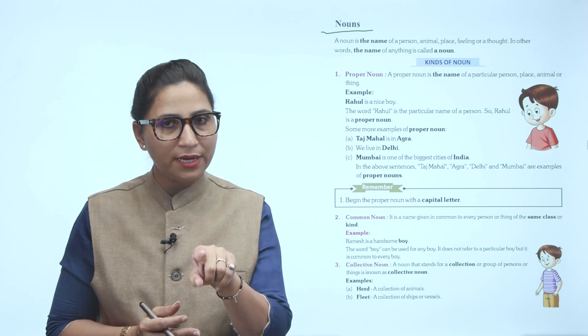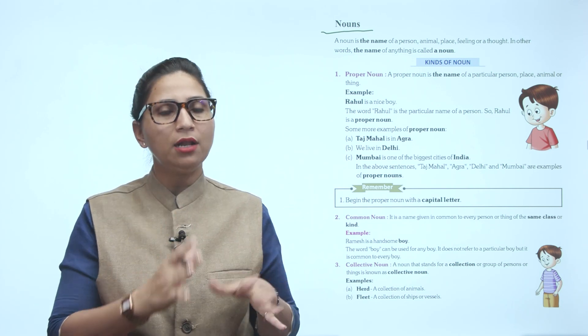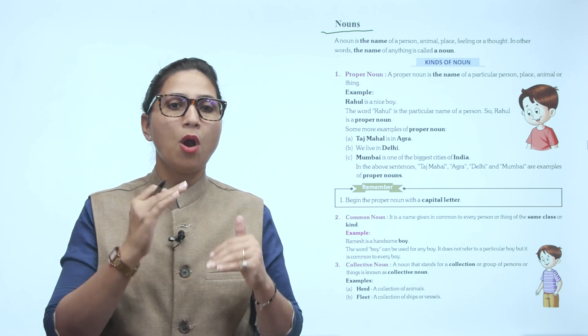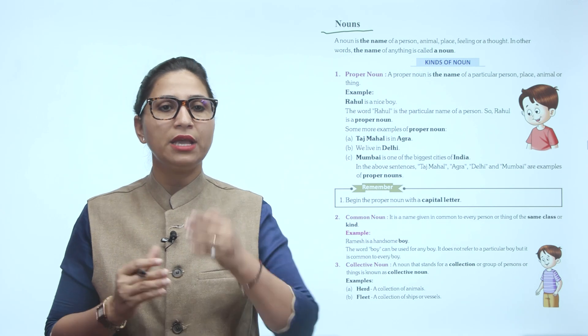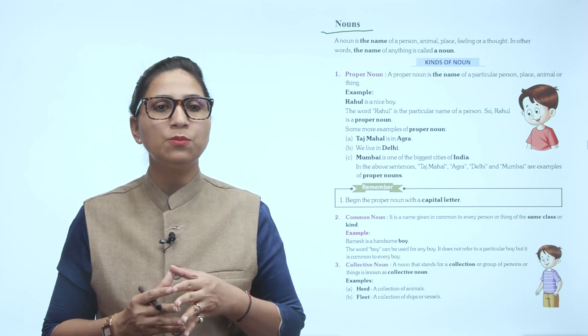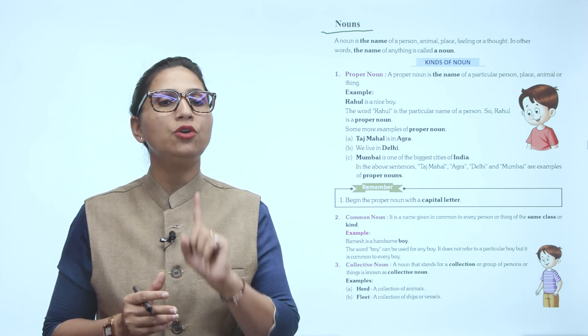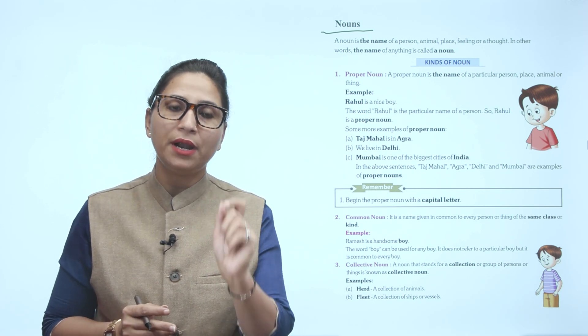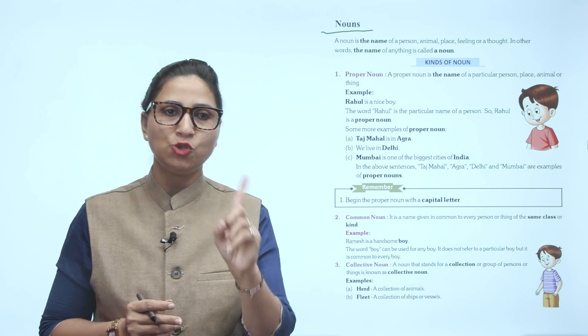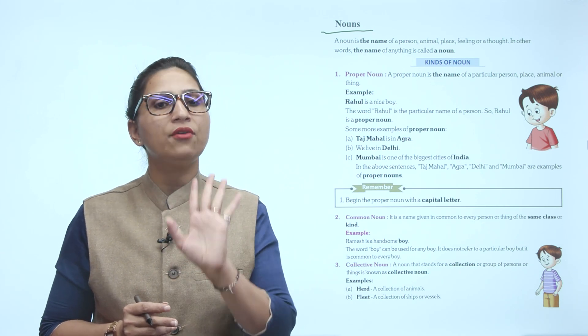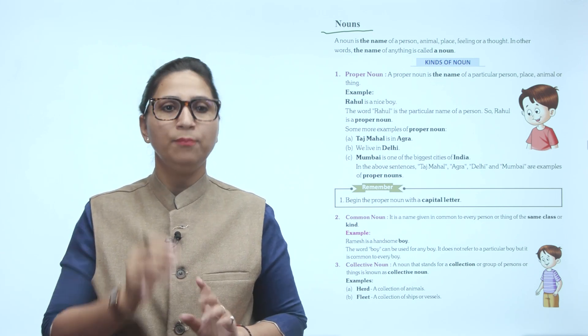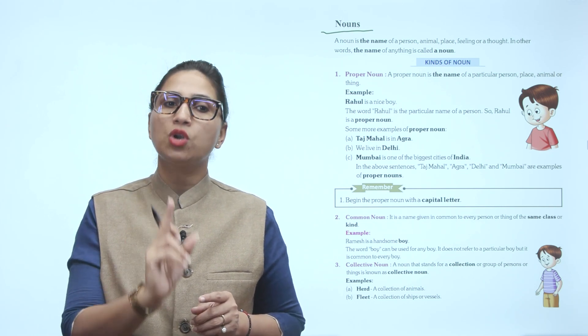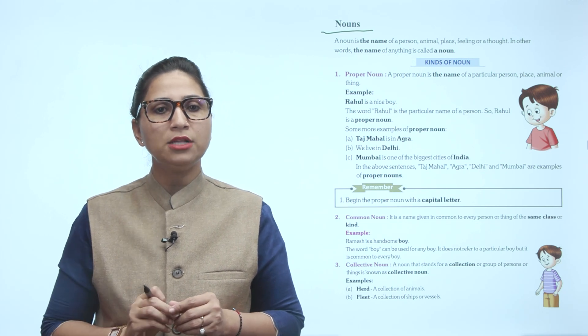Here are some examples of proper nouns. 'Rahul is a nice boy.' We are talking about only Rahul - a particular person, not Mohan, not Sohan, not just any boy. The word Rahul is a particular name of a person, so Rahul is a proper noun.